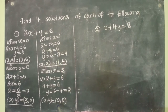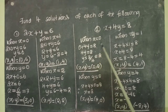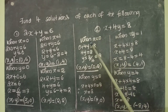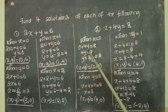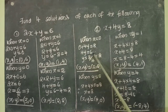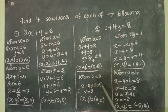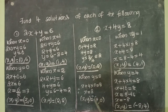So I found four solutions — you can find out different solutions also. I found four different solutions for the second equation also. When x equal to 0: 0 plus 4y equal to 8, 4y equal to 8, y equal to 8 by 4 equal to 2. Therefore (x, y) equal to (0, 2). Then when y equal to 0: x plus 4 into 0 equal to 8, x equal to 8. Therefore (x, y) equal to (8, 0).